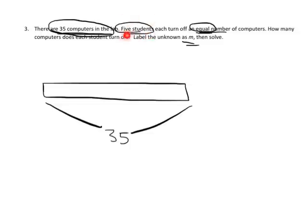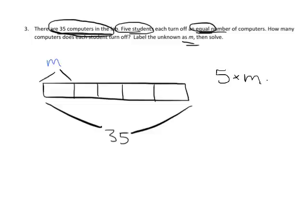It says five students each turn off an equal number of computers, so that means I'm going to take these computers and cut them into five equal-sized groups. There are our five students: 1, 2, 3, 4, 5. We don't know how many computers each student turns off, so that is our unknown. We're being told to label it with an M. Now we can record this either as a multiplication problem or as a division problem. As a multiplication problem, I would say we have five groups of M, and that is equal to 35.